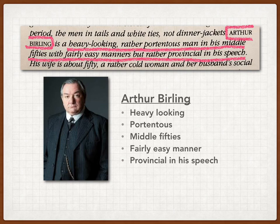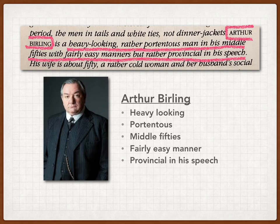Let's first start with Arthur Birling. According to the description, Arthur Birling is a heavy looking man. Heavy looking means that he's a little bit chubby, a little overweight. He's also portentous, which means that he thinks he is very smart and more superior than other people. He's in his middle 50s, and he has a fairly easy manner, meaning that he's comparatively more casual than other upper class or middle upper class people.